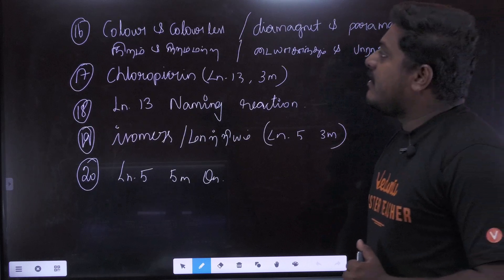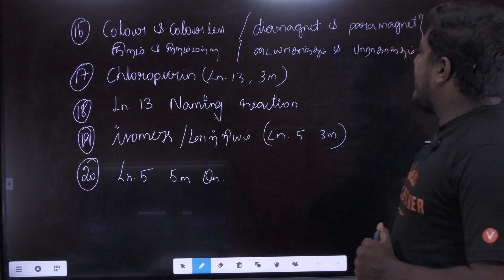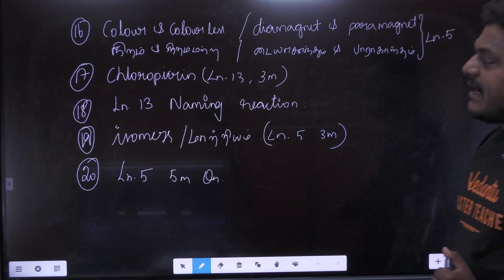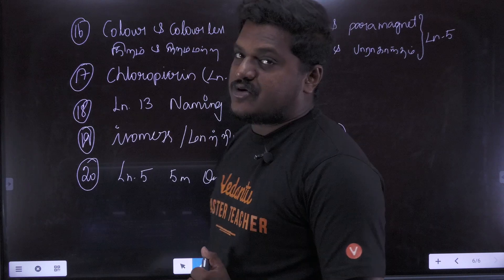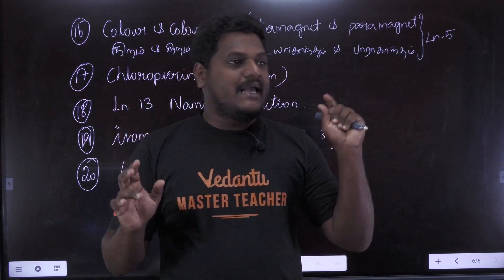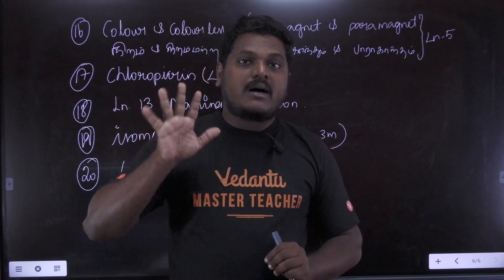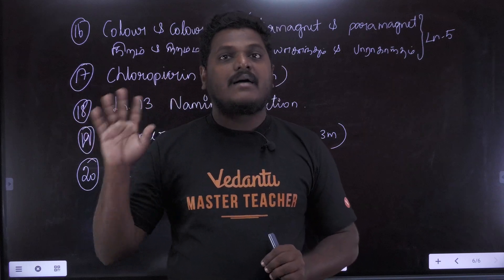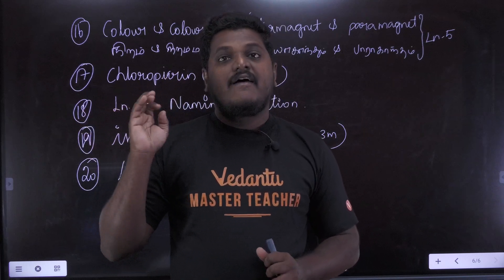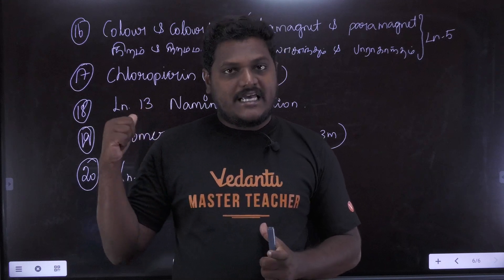Colour and colourless. Diamagnetic and paramagnetic. There is still an understanding of this condition. Lesson 5 is all about this. Why does it matter? 2 mark, 3 mark, 5 mark — this is a minimum level question. So you can ask me to answer your questions in these 20 questions.